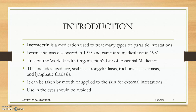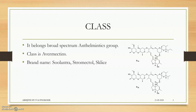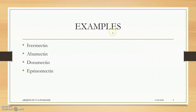Ivermectin is used to treat both intestinal or internal parasitic infestations and also external parasites. It belongs to the class avermectin, which is a broad-spectrum anthelmintic. Brand names include Soolantra, Stromectol, Sklice, etc. The drugs belonging to the avermectin class include ivermectin, abamectin, doramectin, and eprinomectin. Note that selamectin is NOT an avermectin.